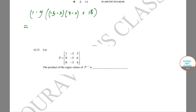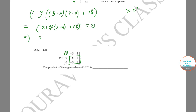The -3 term will be 0 because there's a column of zeros here, and the 3 term will also become 0 because there's a column of zeros. So the determinant will just be this times the determinant of this block.